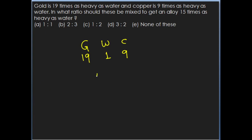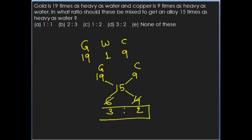We take gold as 19 units and copper as 9 units. These two are mixed so that the new alloy obtained should be 15 times as heavy as water. Taking the difference: 19 minus 15 is 4, and 15 minus 9 is 6. On simplifying, 2 threes are 6 and 2 twos are 4. Therefore gold and copper have to be mixed in the ratio 3 is to 2.